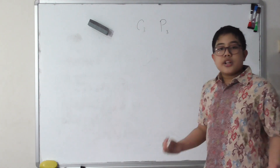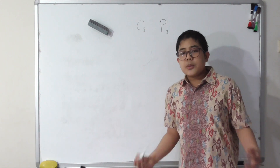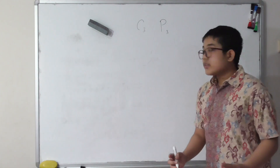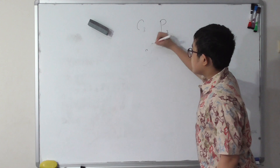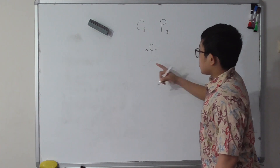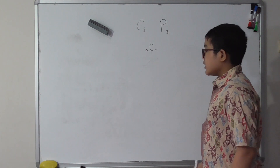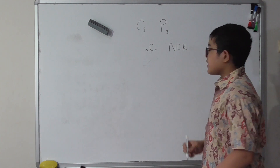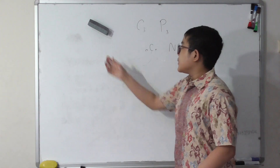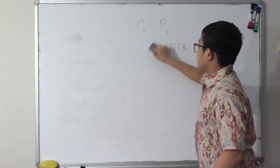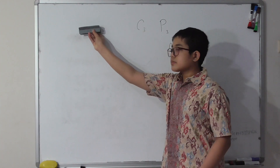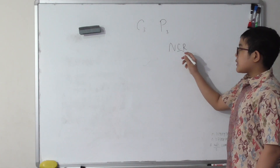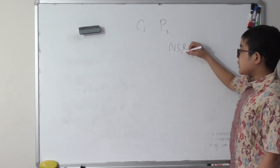Let's start by asking ourselves: what is actually combination and permutation? Combination is denoted mathematically as nCr — I like to write it as capital N, C, and R because it's a little bit easier to read and write. For combination it says C in the middle; for permutation it says P.